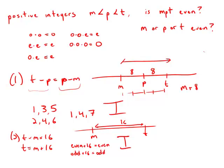So in other words, m plus 8 equals p. m plus 16 equals t.